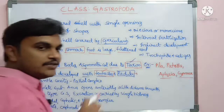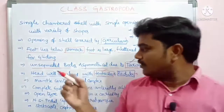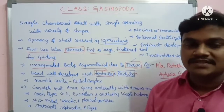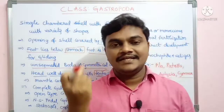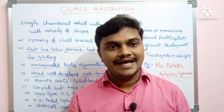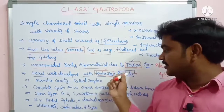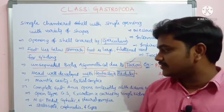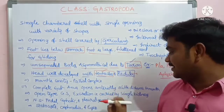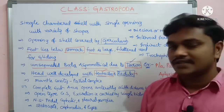The mantle cavity is variously modified into a palleal complex. A complete gut is present, meaning there is both an anterior mouth end and a posterior anus end. The anus opens anteriorly at a short distance from the mouth.